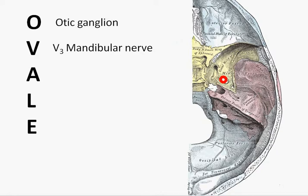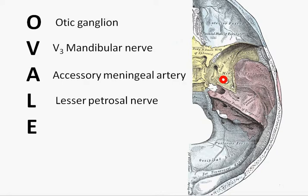A is for the accessory meningeal artery. L is for the lesser petrosal nerve. And lastly, E is for the emissary veins.